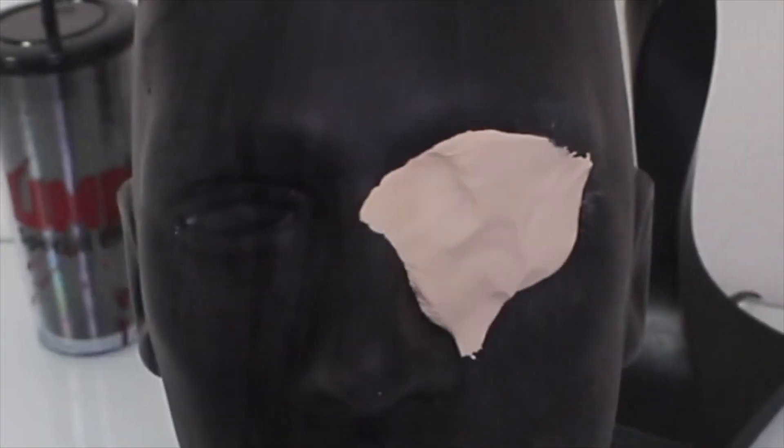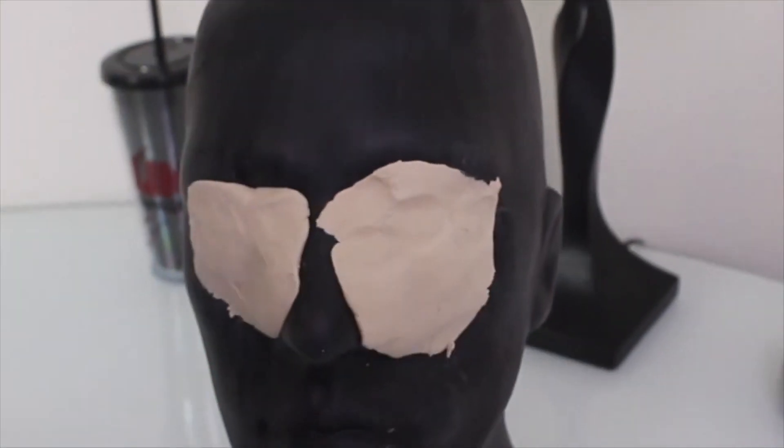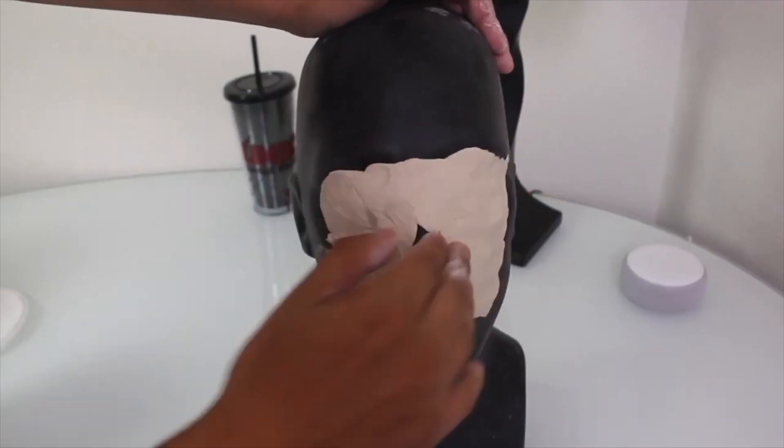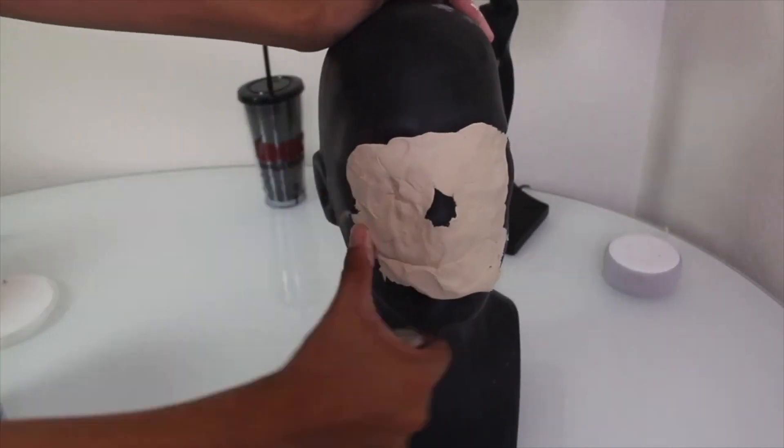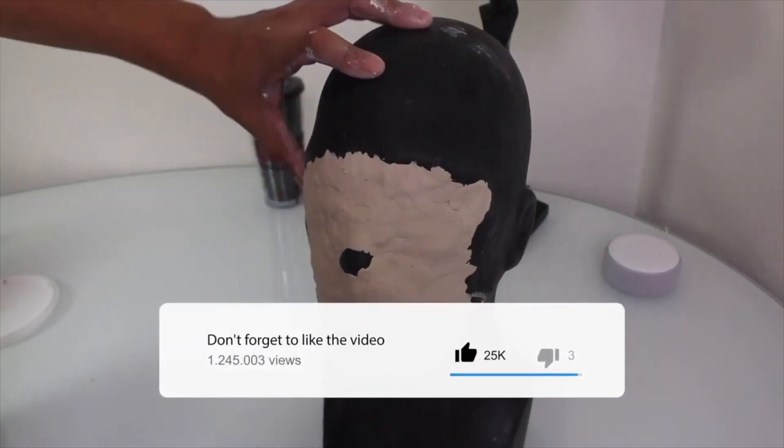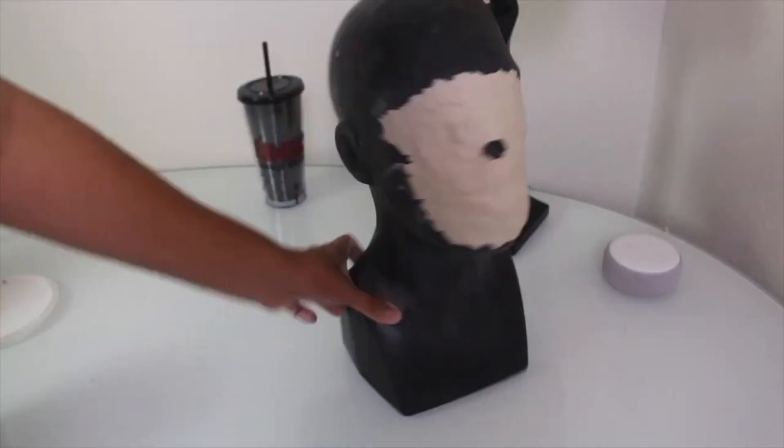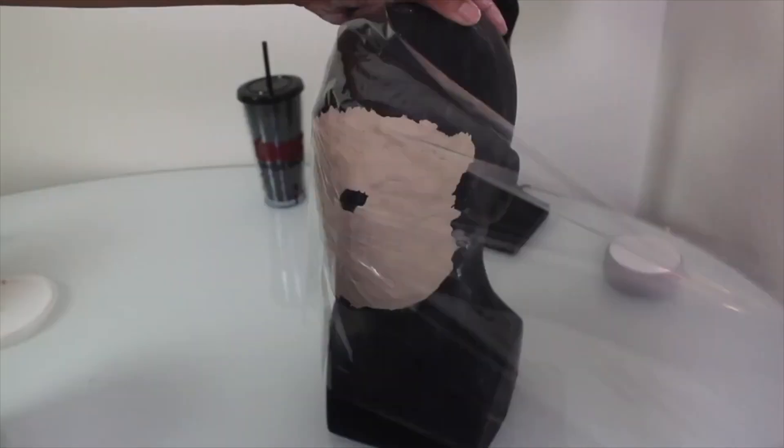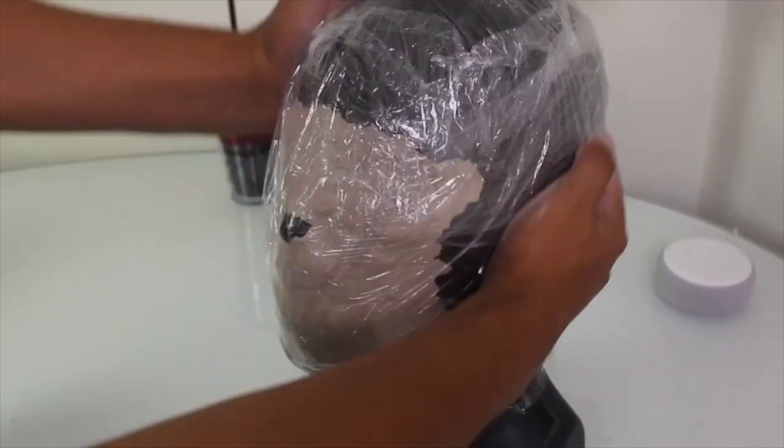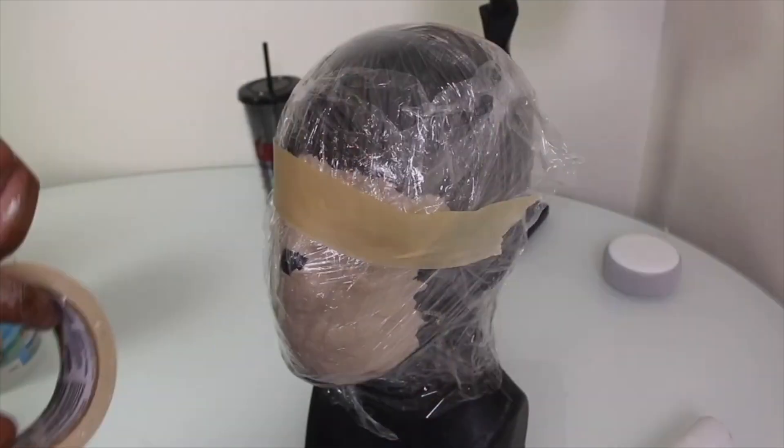While that is soaking, take out your face cast and some clay. Build up the clay on the cast until you get a smooth surface to sculpt the Legion mask onto. Then wrap plastic wrap around the entire cast, and wrap it up with tape.